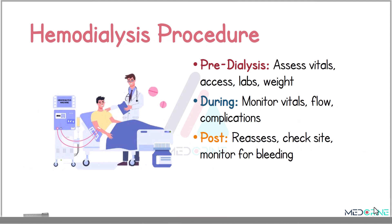The hemodialysis procedure has three basic steps: the pre-dialysis, the dialysis procedure itself, and the post-dialysis procedure. In pre-dialysis, we assess the patient's vital signs, labs, weight, and all hemodynamic parameters. During the procedure, we monitor the vital signs, the flow of blood through the dialysis machine, and assess for any complications. After the procedure is done, we reassess the patient and check the site of vascular access for any bleeding.